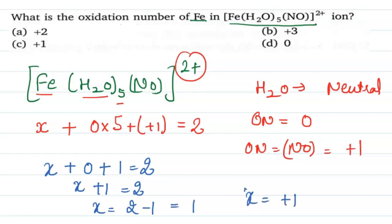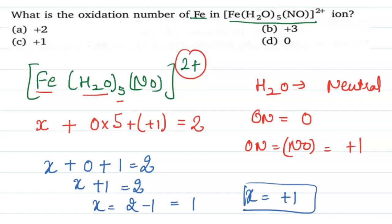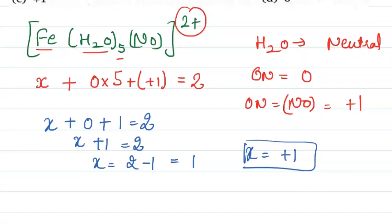So X equals plus 1. Now X is the oxidation number of iron. So we write here: oxidation number of iron equals plus 1.